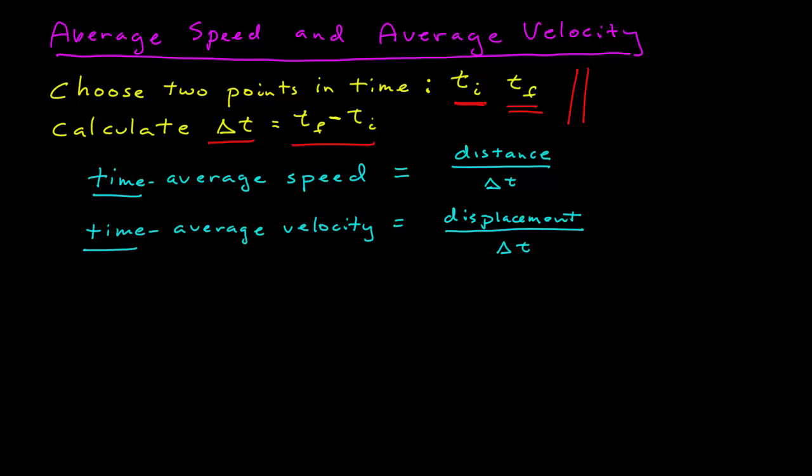Now remember, when you dealt with distance and displacement, we found that they're not always the same, and often they're different. By the same token, then, the time average speed and the time average velocity are often different. This is because distance is a scalar, the time average speed is a scalar, and because the displacement is a vector, the time average velocity is a vector.